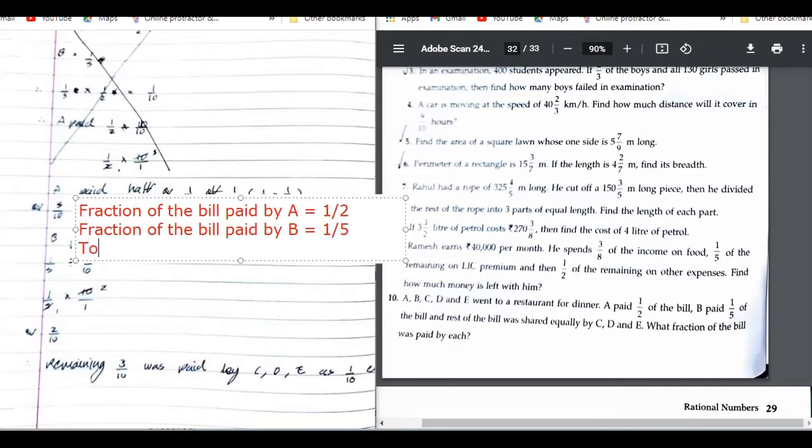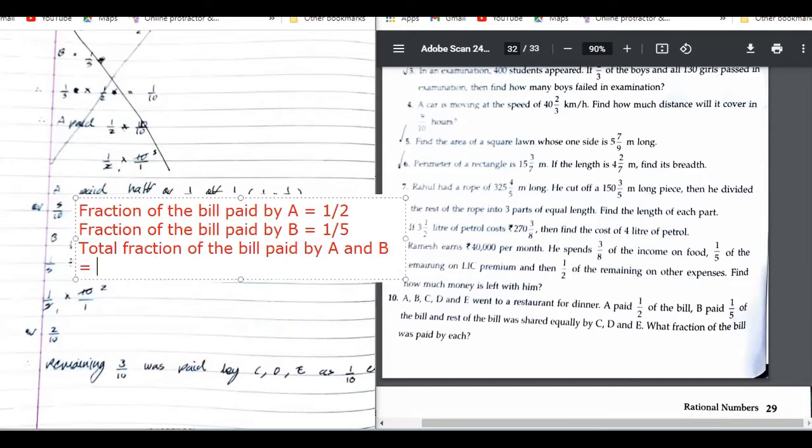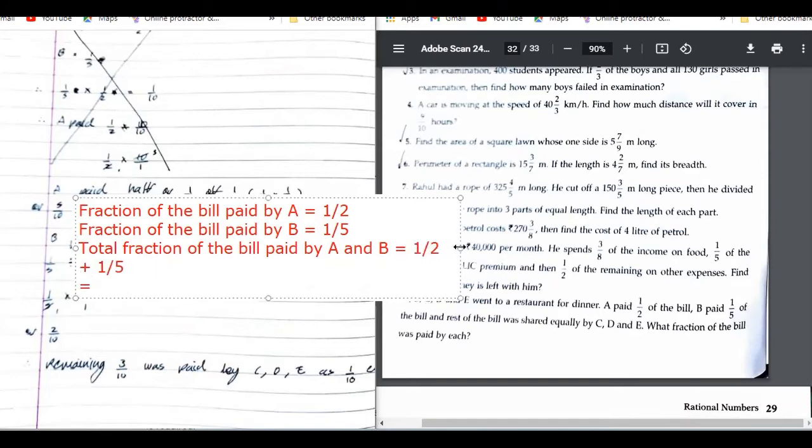So, let us find total fraction of the bill paid by A and B. Is this thing clear? Yes. Can you tell me what was the fraction of the bill which was paid by A and B? It was 7 upon 10.